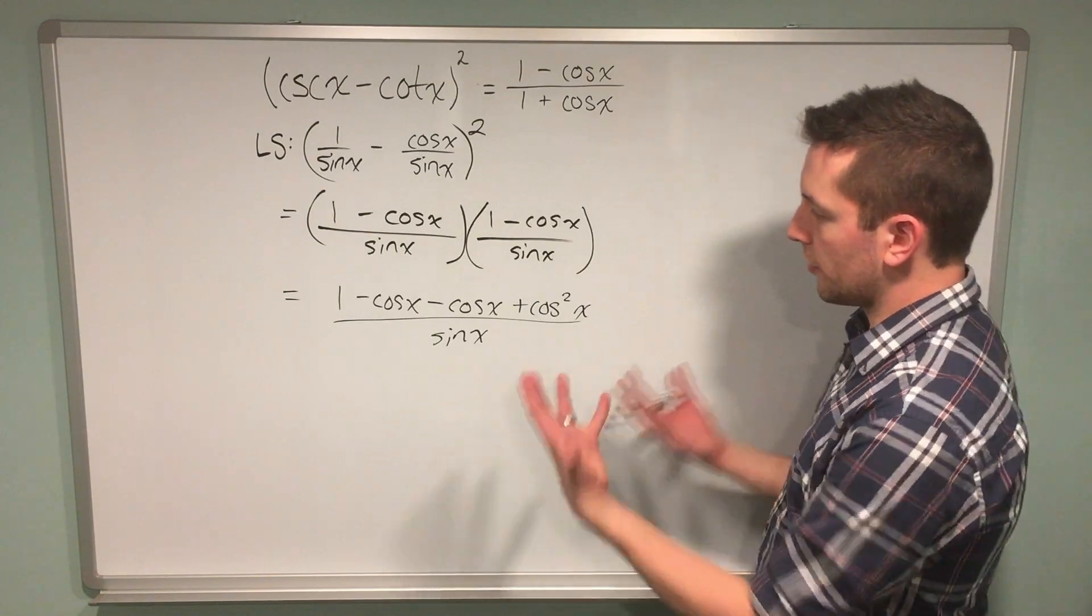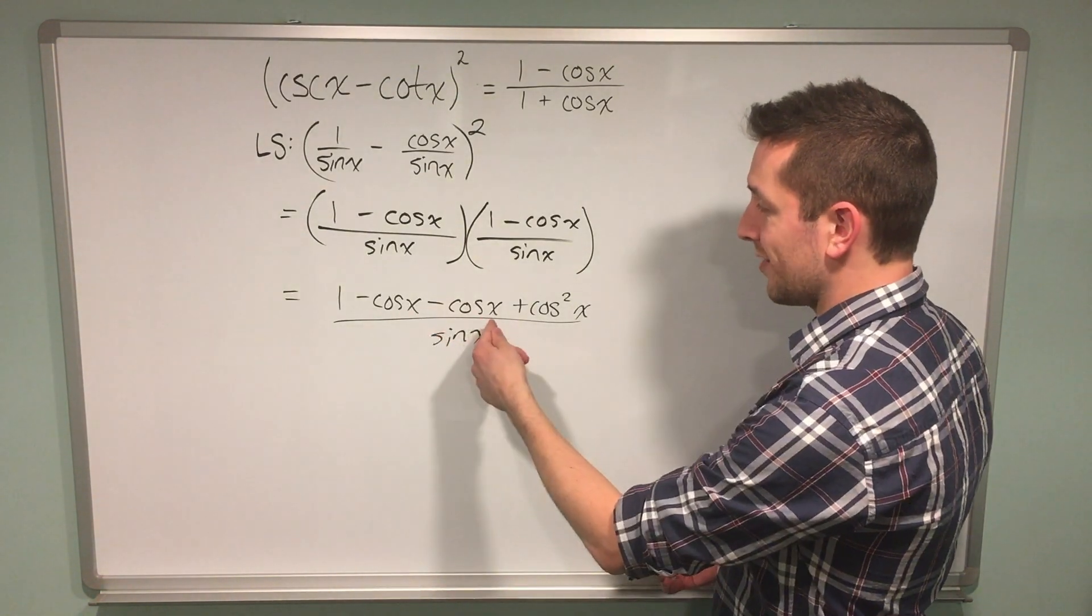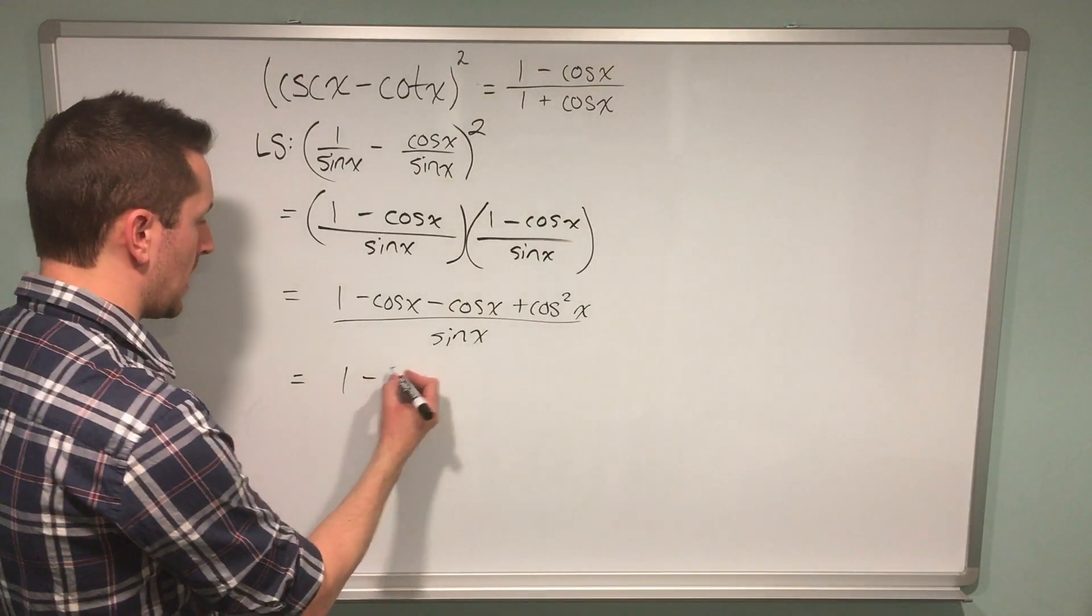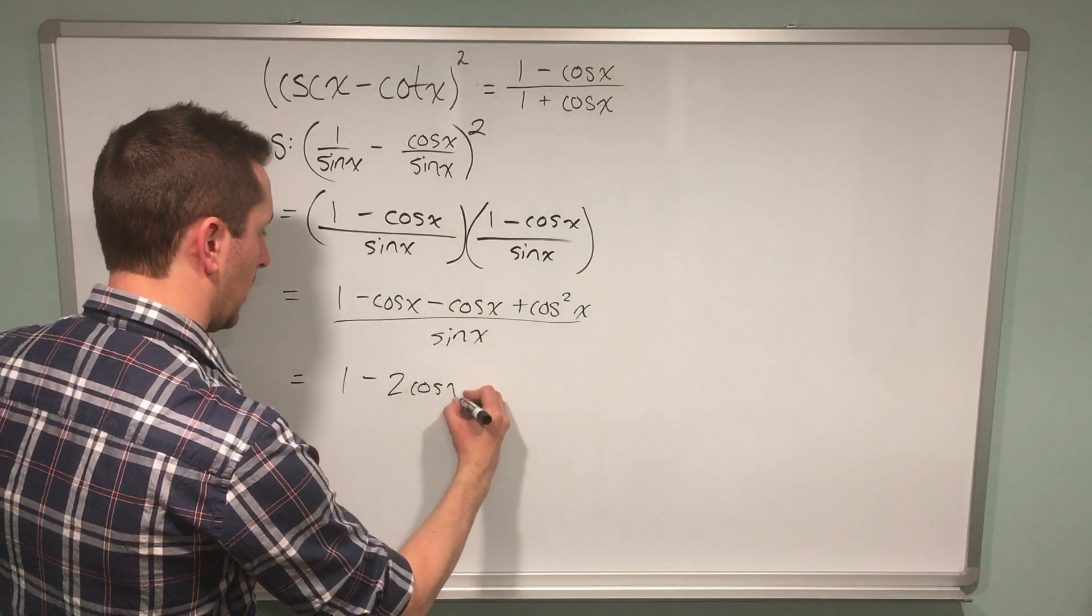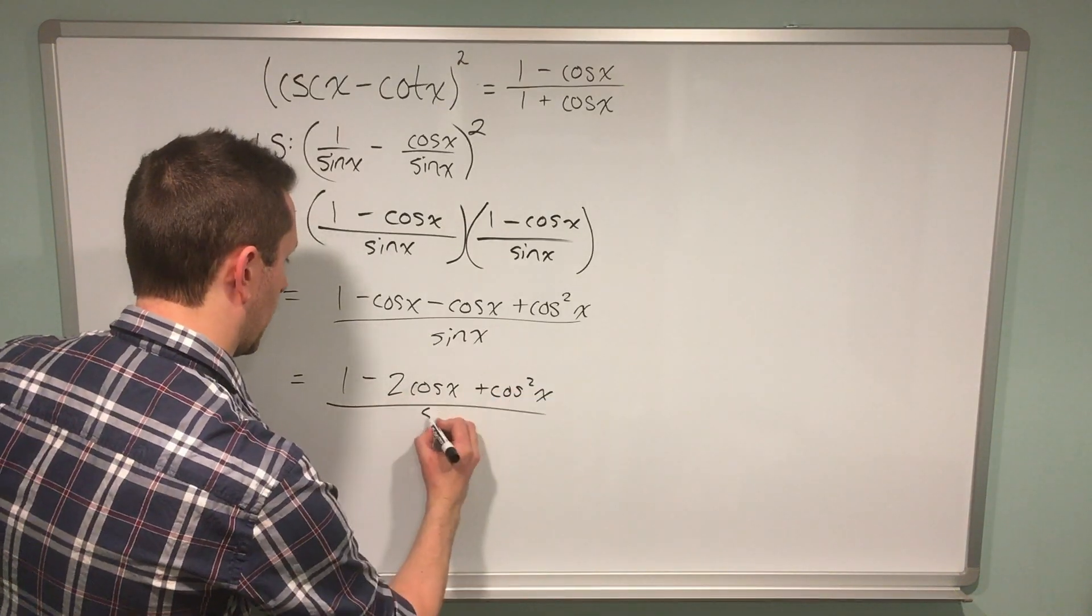At this point, it makes sense to take inventory of what we have in the numerator. I have negative cos x minus cos x, which is negative 2 cos x. And I still have plus cos squared x on the end. Of course, I'm still dividing by sine x.